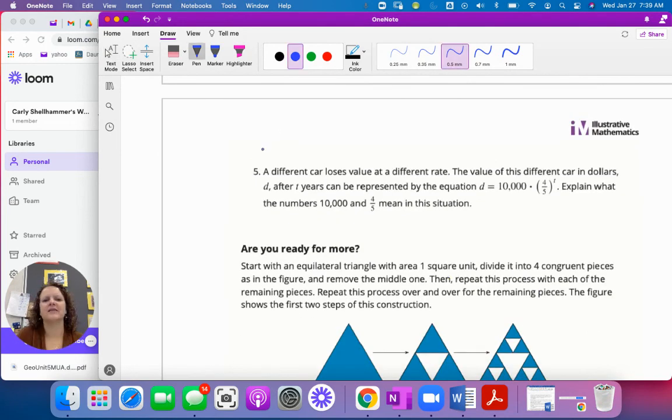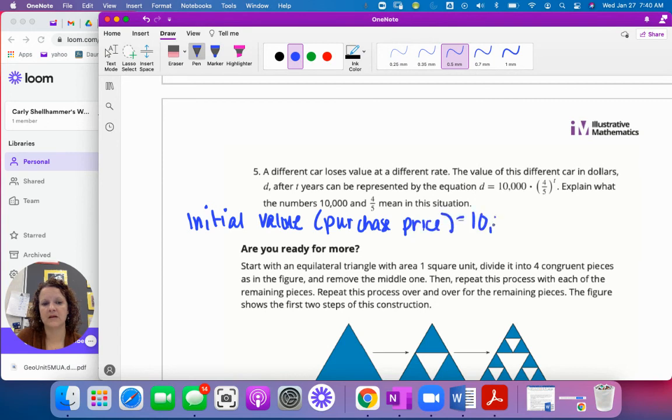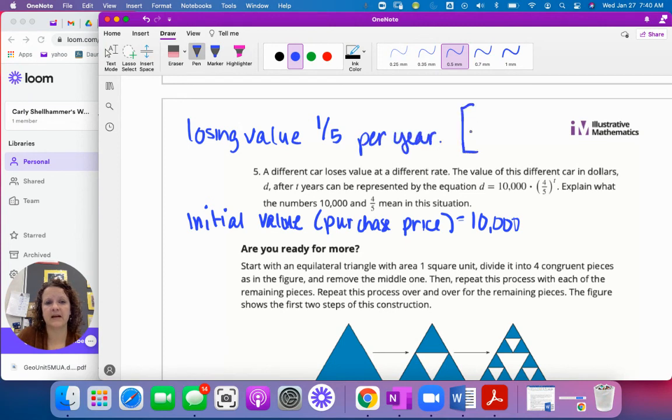A different car loses value at a different rate. The value of this different car in dollars, D, after T years can be represented by this equation. Explain what the numbers 10,000 and four fifths mean in this situation. So this means that our initial value of the car with the purchase price was. We'll say purchase price. That might make better sense to some of you. Equals $10,000. And if we're losing value, go up here. We're not losing four fifths of the value. Four fifths is what remains. So we're losing value at one fifth per year. We can say four fifths of the value is remaining. Cool.